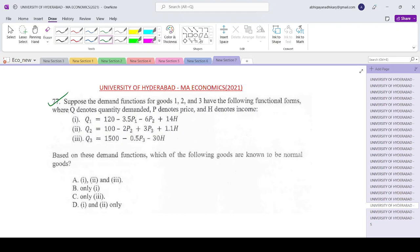So the question is based on these demand functions, which of the following are known to be normal goods? Now if you remember, what is the basic idea when we talk of normal goods? If your income rises, then your demand should rise. And if your price rises, then your demand should fall. Own price, not the other price.